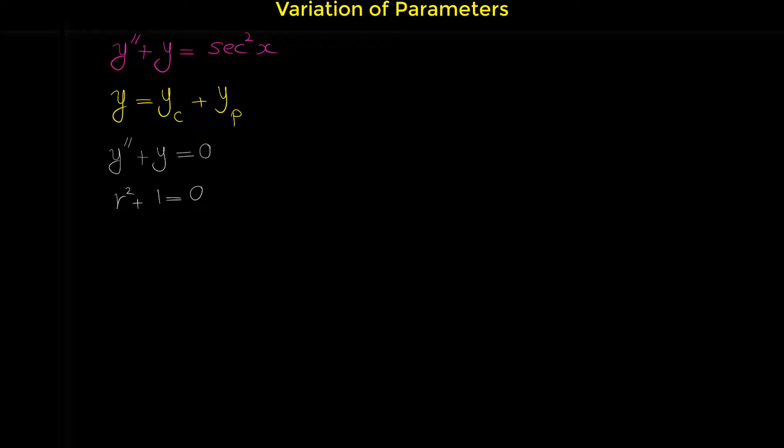Now that we have the characteristic equation, we have to find r, the roots of this characteristic equation. We can use the quadratic formula, or it's easier to move 1 to the other side: r squared equals negative 1. From this, r equals plus or minus the square root of negative 1, which we usually denote with the symbol i, so r equals plus or minus i.